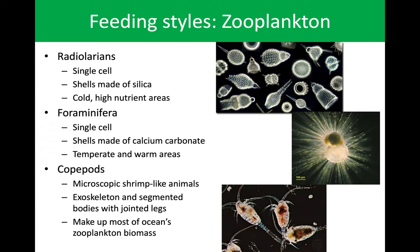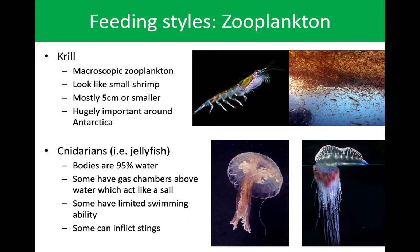Finally, we'll go to copepods, which are some of our smaller zooplankton. These are microscopic shrimp-like animals built with an exoskeleton. When you think about SpongeBob SquarePants and you think about plankton, this is kind of the guy they modeled him after — a single eye, very simple creature with two large antennae. A huge portion of the globe's zooplankton biomass is these copepods. The rest is pretty much made up of krill — our larger macroscopic zooplankton, kind of like very small shrimp.